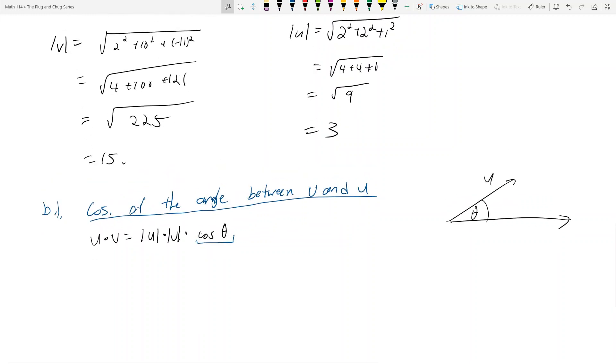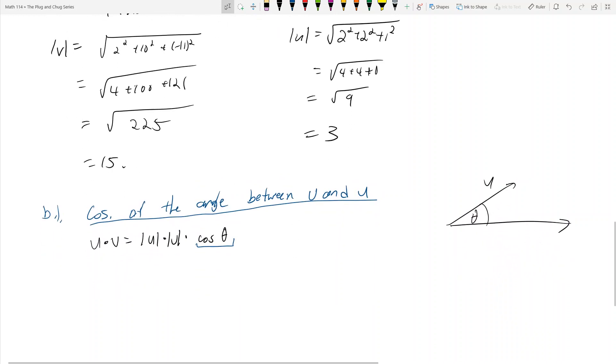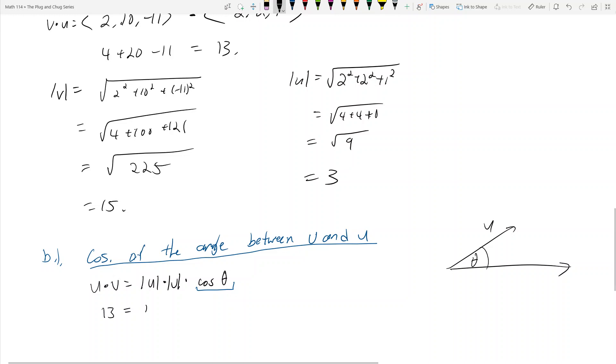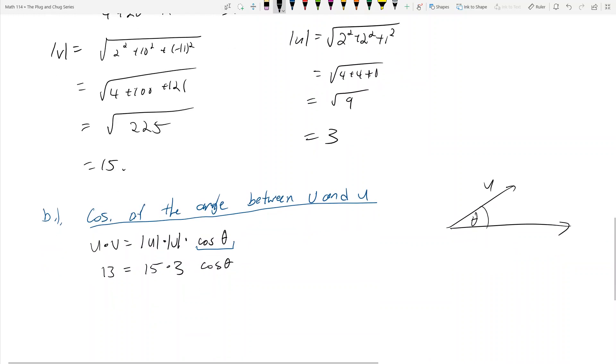And this problem is just asking you to find what the cosine of the angle between v and u is, which essentially just asks you to find what this is. And that means, well, I know what the dot product is. u dot v is 13. So 13 is equal to the magnitude of u, which is 15, times the magnitude of v, which is 3, times cosine theta. Well, solving for cosine theta, we see that 13 over 45 is going to be equal to cosine theta.